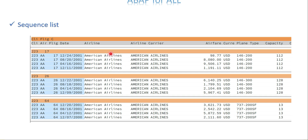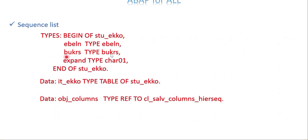A few changes need to be done in the header information, because the expansion icon is going to be added only at the header level, not the item level. So I need one field to be added in my header internal table. Just change the structure of the internal table and add any user-defined name — I'll follow the standard and use EXPAND as the field name.